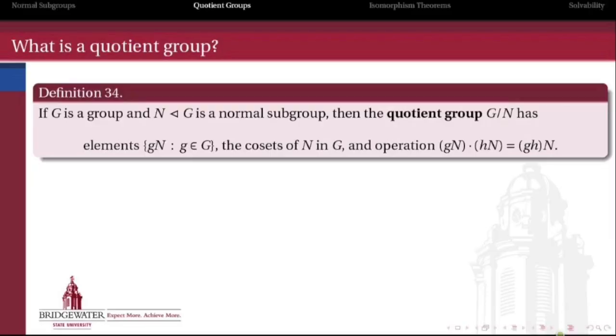Now that we know what a normal subgroup of a group is, we need to make good on that promise that normal subgroups are going to allow us to treat their cosets as though they were elements of the group, so that we can do arithmetic with the cosets of a normal subgroup just by doing arithmetic with the elements of the group that represent those cosets. Let's take a look at how that works.